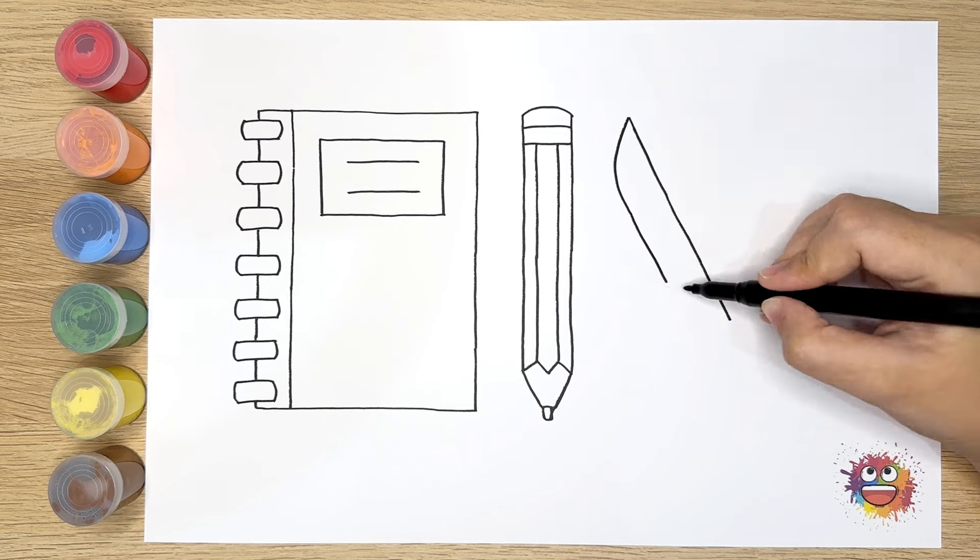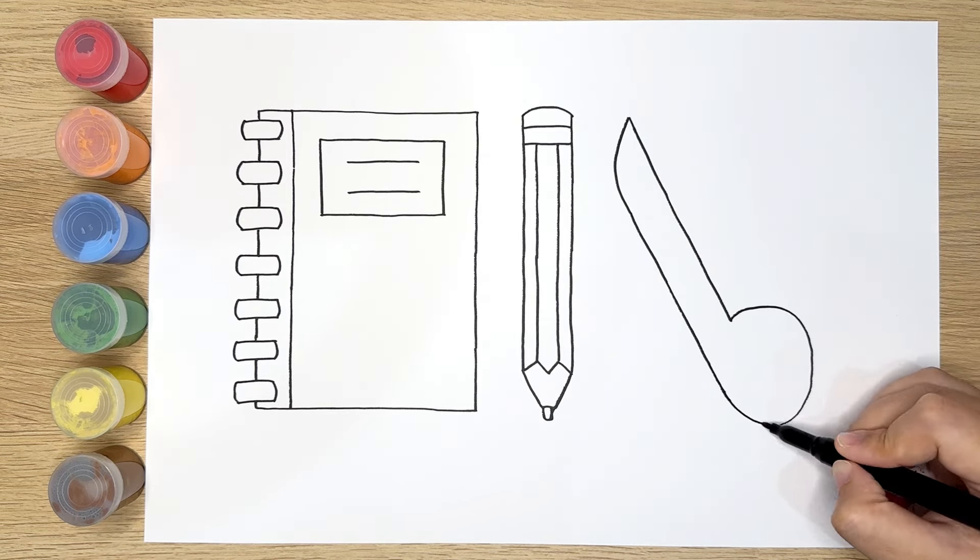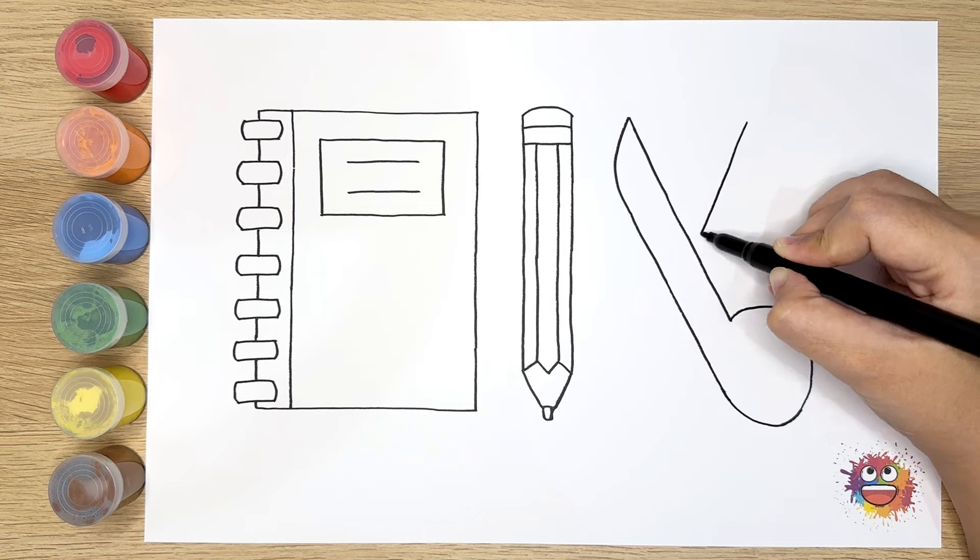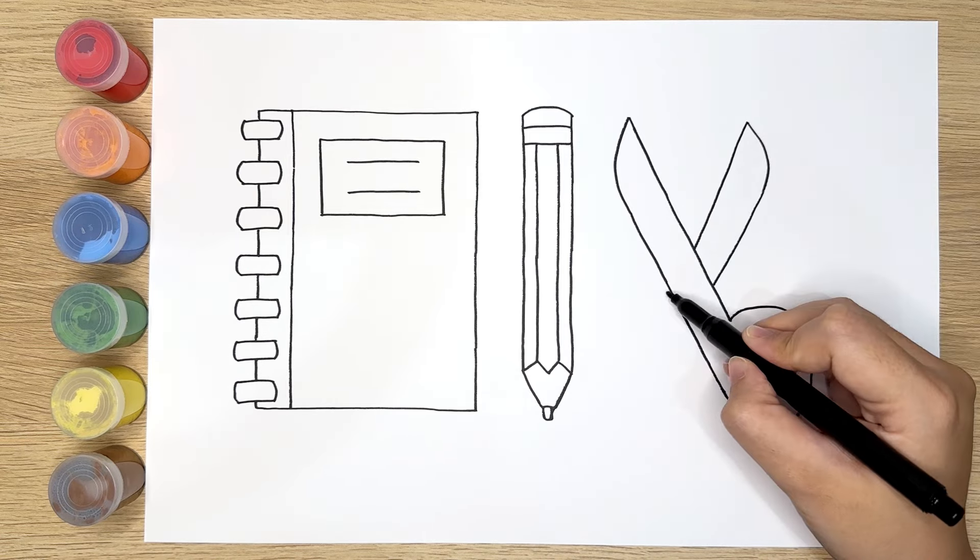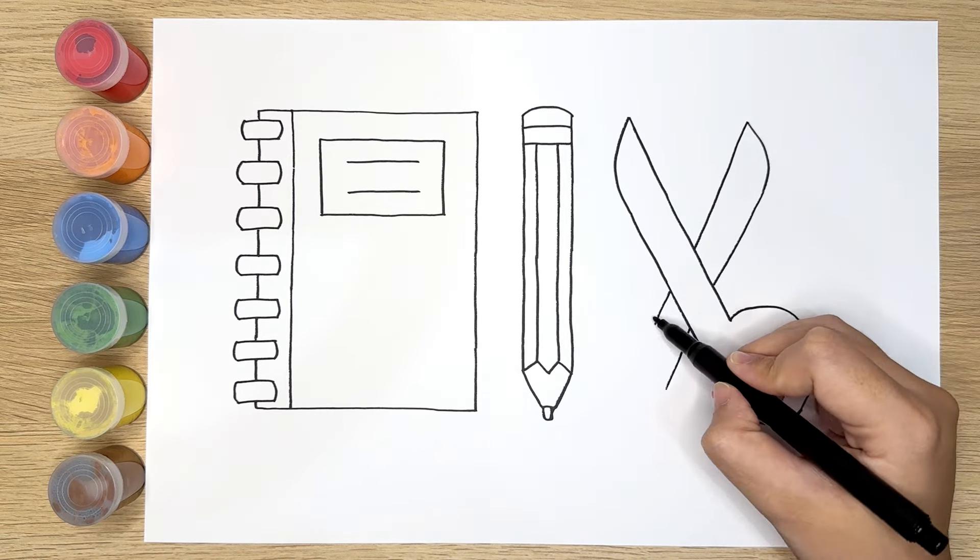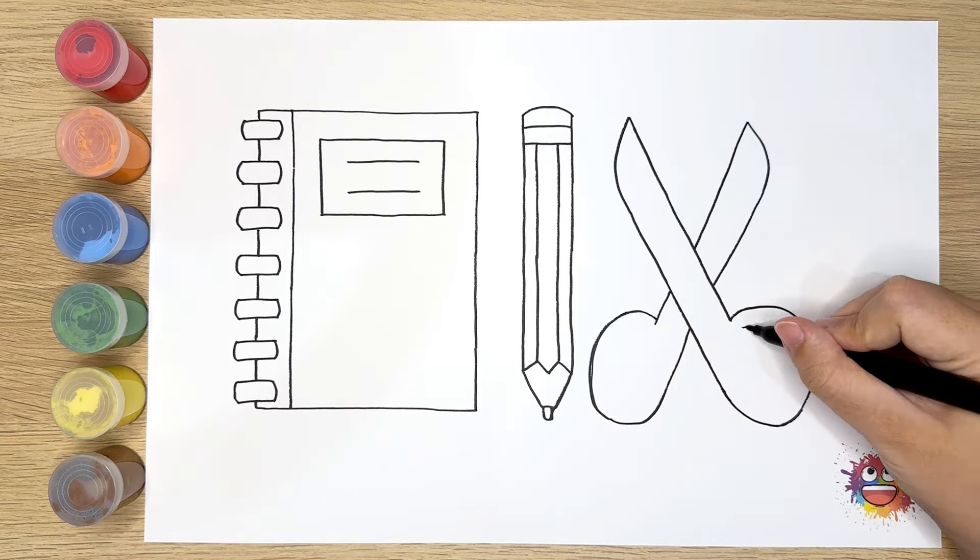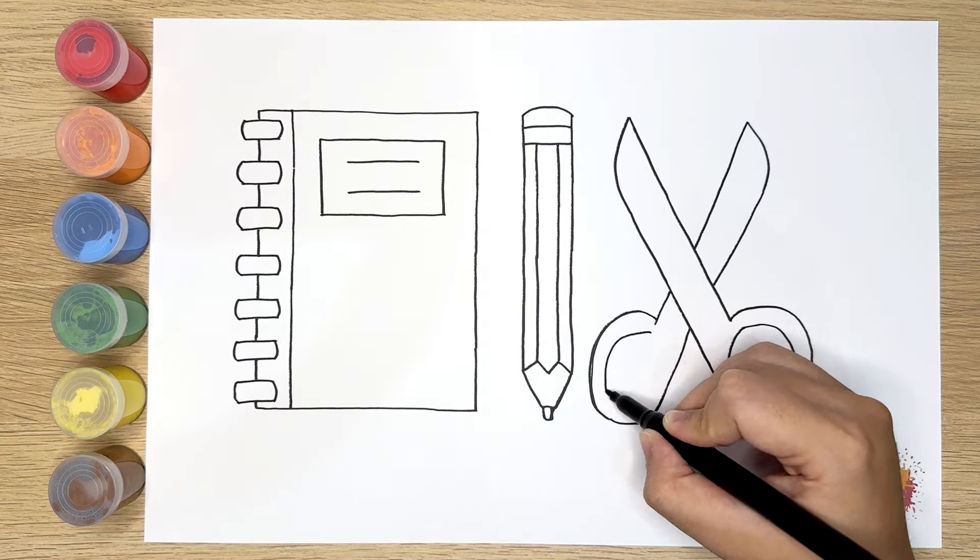Scissors time! They're like friendly helpers. They cut out shapes from paper so you can make cool crafts. You can create cool things like animals, stars, or even a smiling sun.